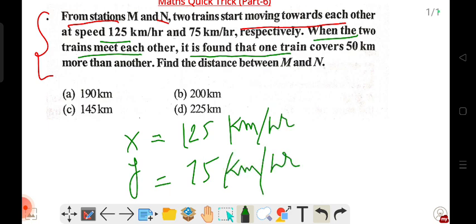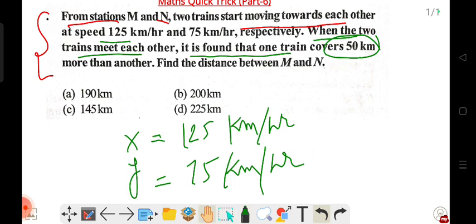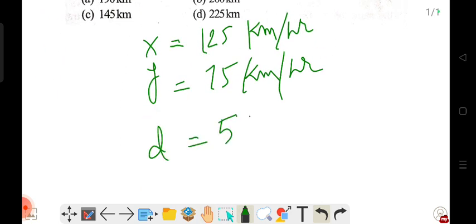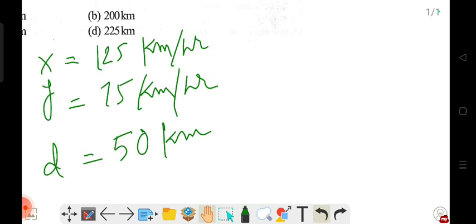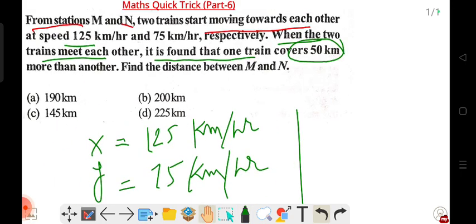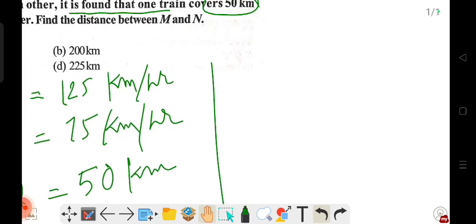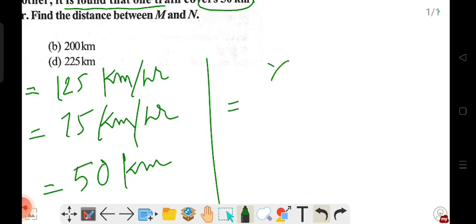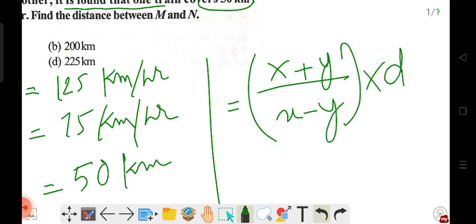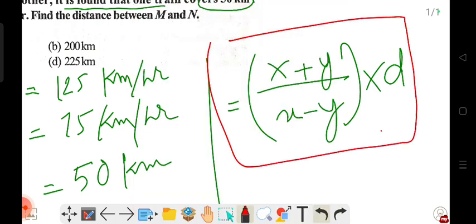The extra distance covered is 50 kilometers. The formula is: the distance between M and N equals (x + y) divided by (x - y) times d. This is the formula when two trains move towards each other at different speeds covering different distances.